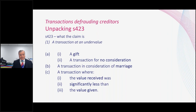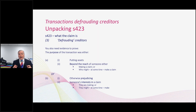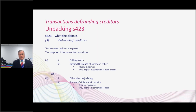Subsection 1 defines what a transaction at an undervalue is — pretty much what you would expect. The slides will be available afterwards so I won't go through that in detail. Subsection 3 is the one that talks about defrauding creditors. The importance of this is it's not just enough to show there was a transaction at an undervalue. You also have to show why — what its purpose was. You will only succeed under Section 423 if you have evidence to prove that the purpose of the transaction was to prejudice people who might bring a claim against the debtor, or to put assets beyond their reach. You must have that evidence, otherwise you will not succeed.